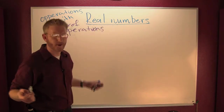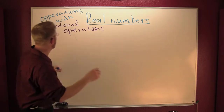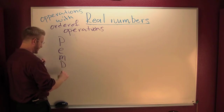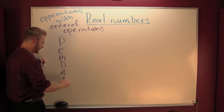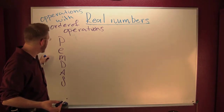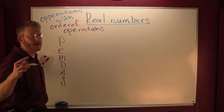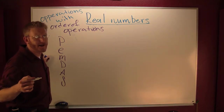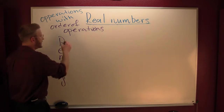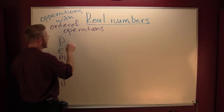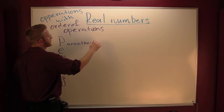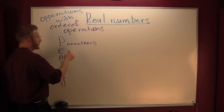Please excuse my dear aunt Sally. I know what some of you are thinking. The P stands for parentheses and the E stands for exponents.